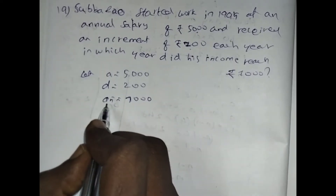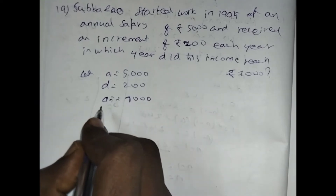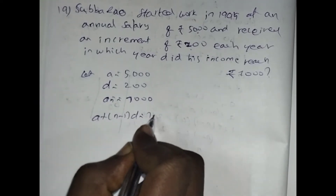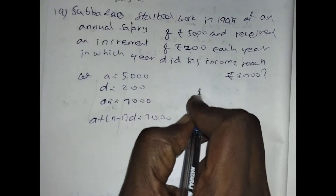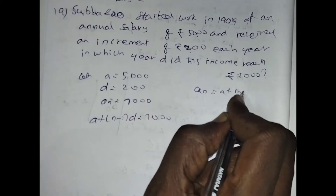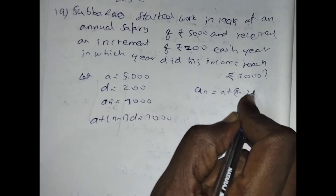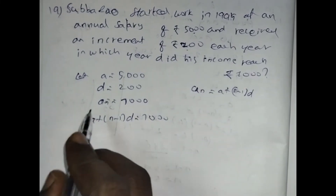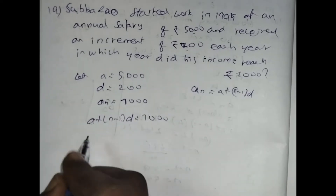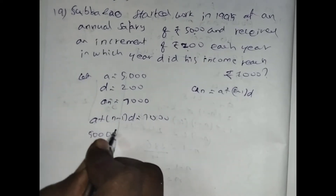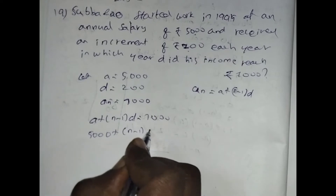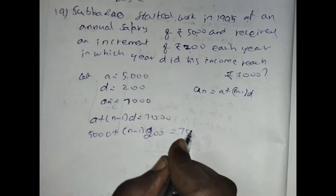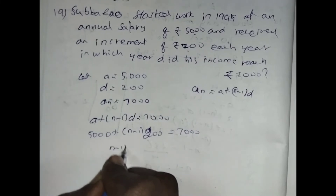So now we write the nth term formula. We can write AN equal to A plus N minus 1 into D, equal to 7000, because we know the formula of AN in Arithmetic Progression. So instead of AN we can write A plus N minus 1 into D. We know the value of A and we know the value of D. So: 5000 plus N minus 1 into 200 equal to 7000.